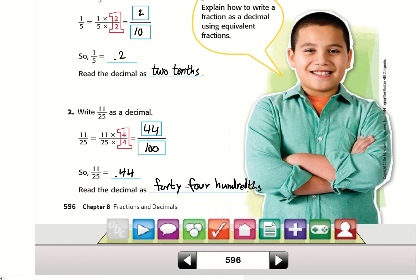Write 11/25 as a decimal. I can change 25 to 100 by multiplying by 4. So I'm going to multiply the top and bottom by 4. 25 times 4 is 100. 11 times 4 is 44. So I get 44 hundredths.